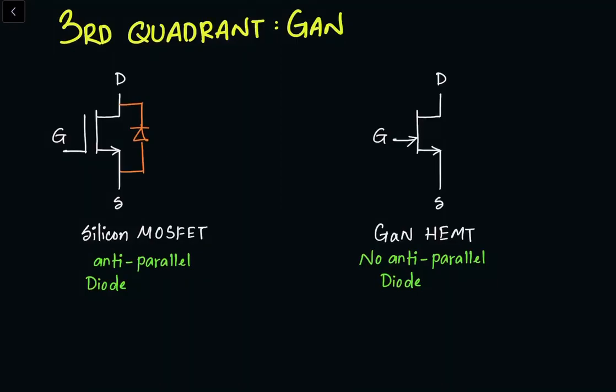Hi, this is Jewel. Today's topic is on the third quadrant operation of the gallium nitride HEMT and its comparison with the traditional silicon power FET.